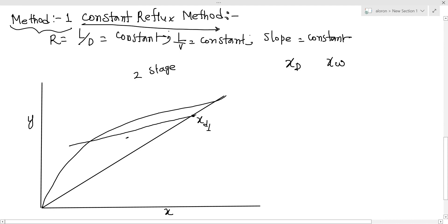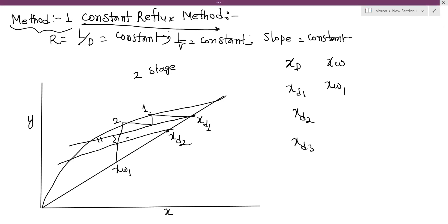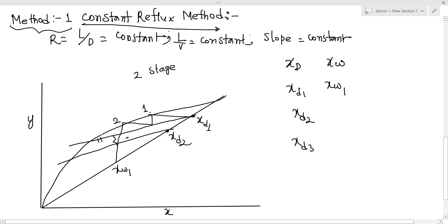For the constant reflux method with equilibrium stages, I will show you the graphical construction. We have operating lines that are parallel to each other since the slope is constant. We identify compositions x_{W1}, x_{D1}, then x_{W2}, x_{D2}, x_{W3}, x_{D3} — stepping through the stages. The lines are parallel because the slope is constant.